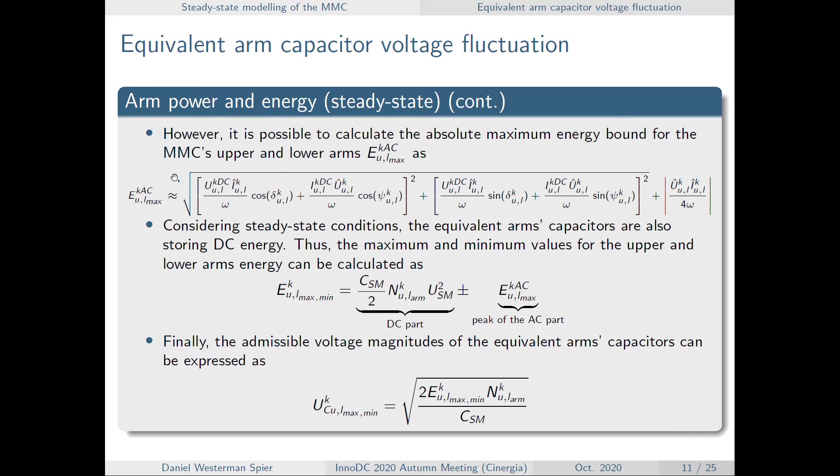Then this is the final expression. So this is going to be the maximum ripple that the capacitor, that the energy can have.